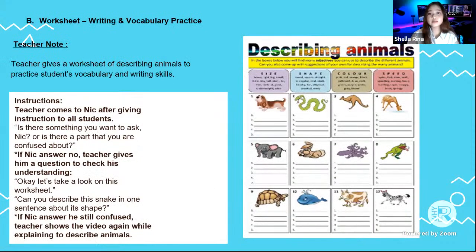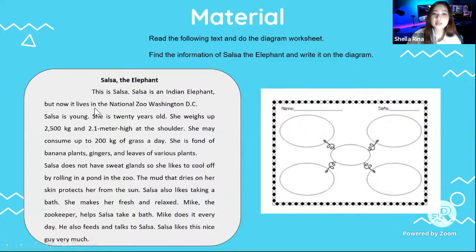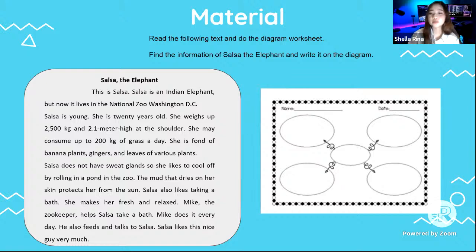Next is the worksheet, which includes several pictures to get the students' attention. In the second meeting, there is a reading activity. I use a story about Salsa B-11 with simple sentences to make sure students understand the text. After reading, students share their opinion about what they got from the text in a chart. This tests their comprehension skills.